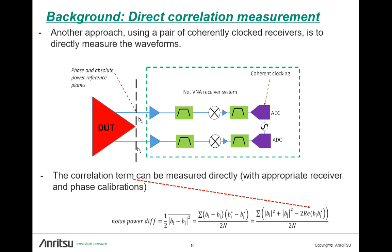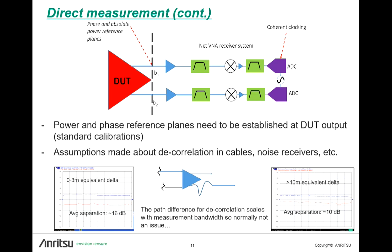The idea is: if you have coherent clocking and you don't decohere these noise waves too much, then you can directly measure this. You do need an absolute power reference plane, as you do for all of these, and you need a relative phase calibration plane for that to make sense. For both of these types of methods, you can lose the coherence coming out of the DUT if, for example, you have a cable or a transmission line that's very asymmetric between the DUT output ports. If that's long enough, any coherence you did have can get lost — that may be what happens in the system, and that's fine, but you don't want it to be part of just your measurement scenario.